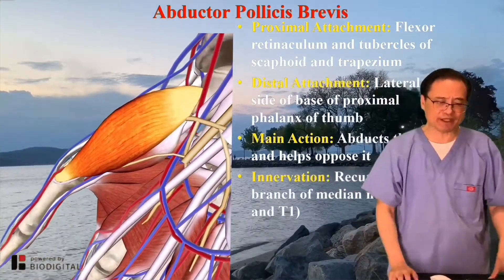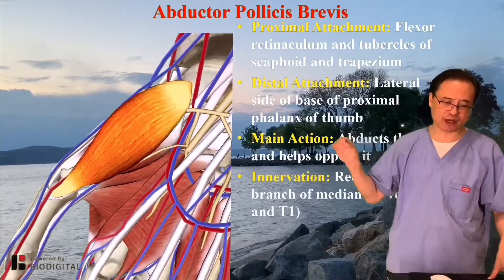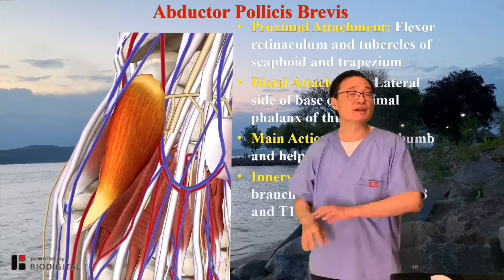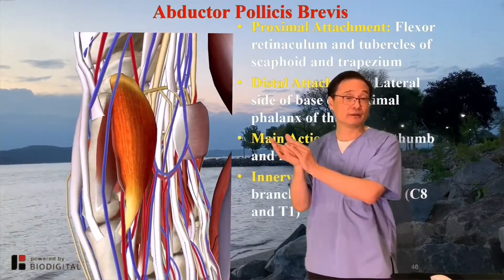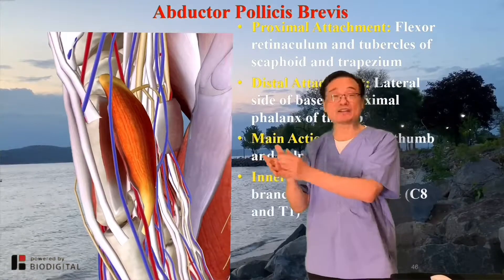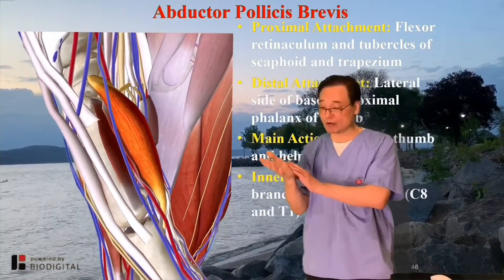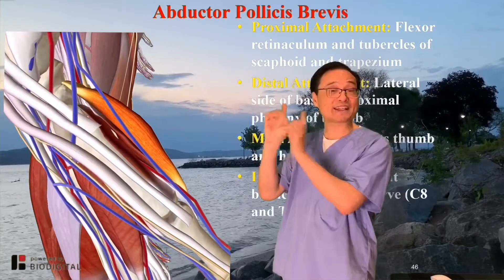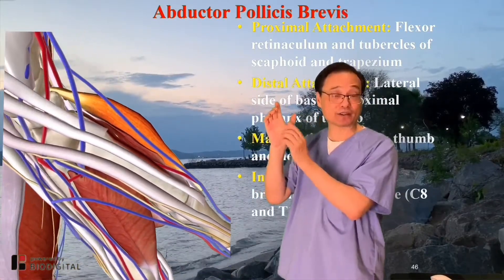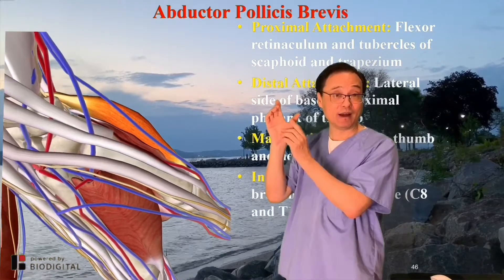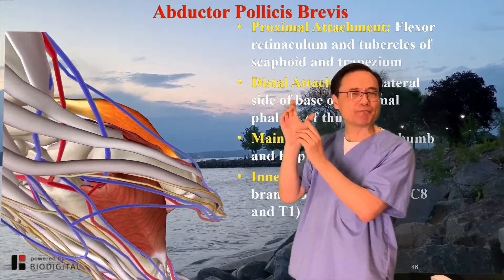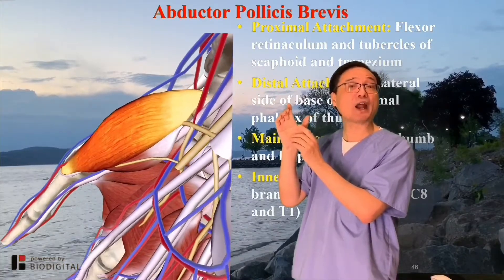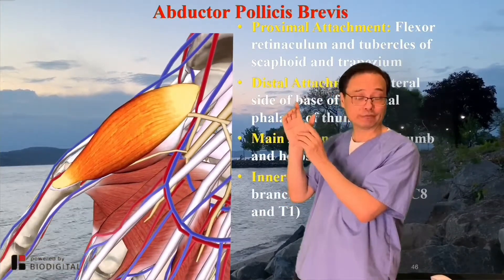Innervation: recurrent branch of the median nerve. Remember, this is very important. If you cut the recurrent branch of the median nerve, basically this nerve innervates the thenar compartment — all the muscles on the palm side of the thumb — except Adductor Pollicis. Adductor Pollicis is so deep, we consider it an intrinsic muscle, innervated by the ulnar nerve.